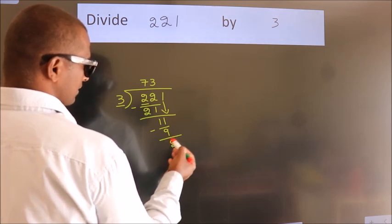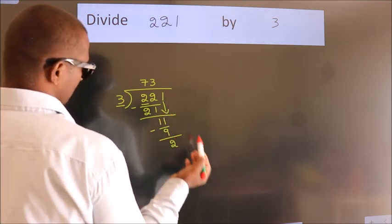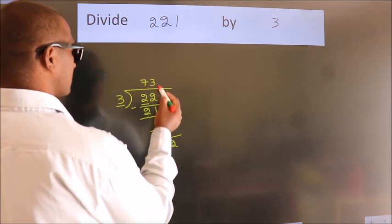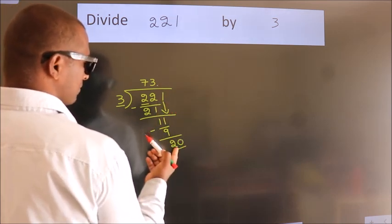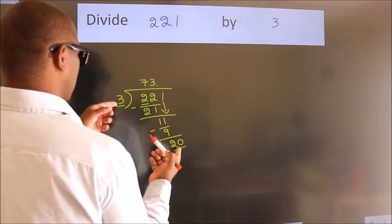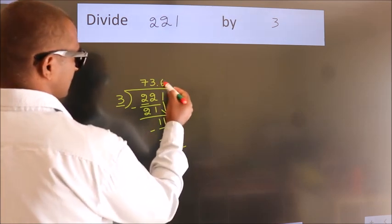After this, no more numbers to bring down. So what we do is put a dot and take 0. So, 20. A number close to 20 in the 3 table is 3 times 6, which is 18.